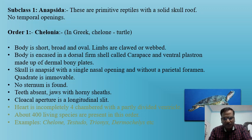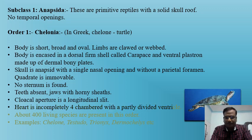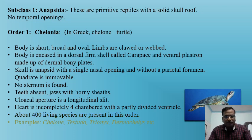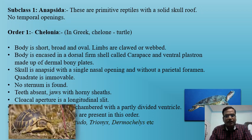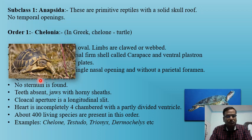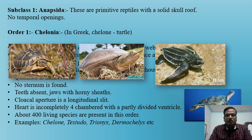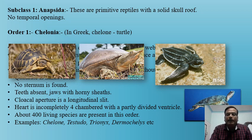The cloacal aperture is a longitudinal slit, which is a common character in most reptilian subclasses. The heart is incompletely four-chambered — except in crocodiles, all other reptiles have a three-chambered heart. There are about 400 living species in this order, represented by Chelonia (sea turtle), Testudo (tortoise), Trionyx (freshwater turtle), and Dermochelys (leatherback turtle, with a leathery rather than bony shell).